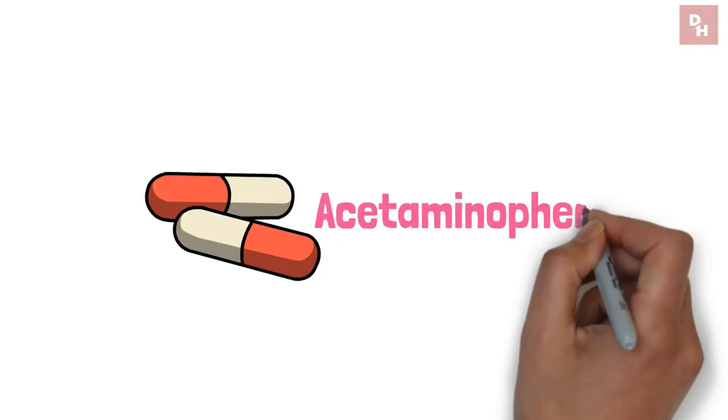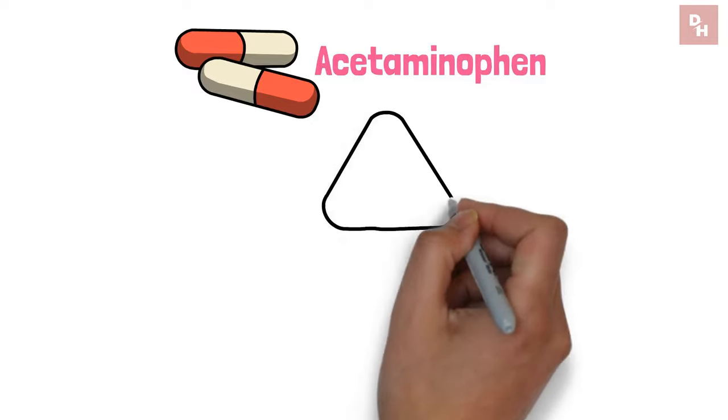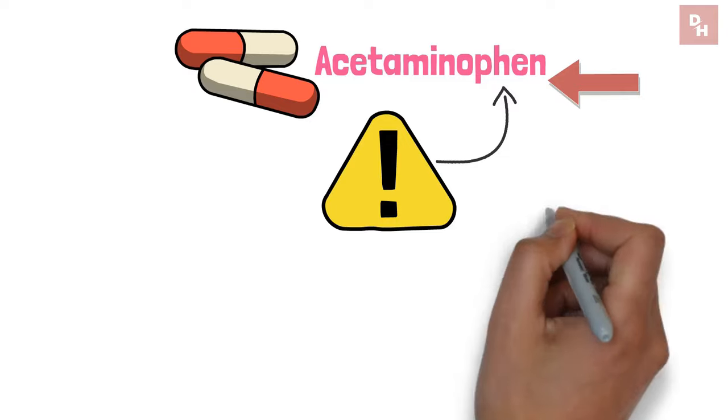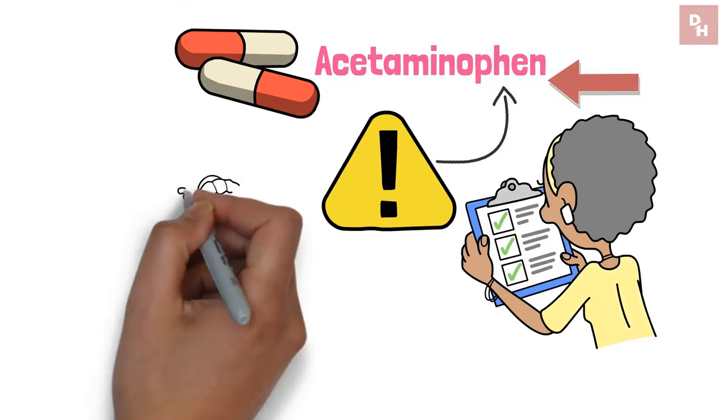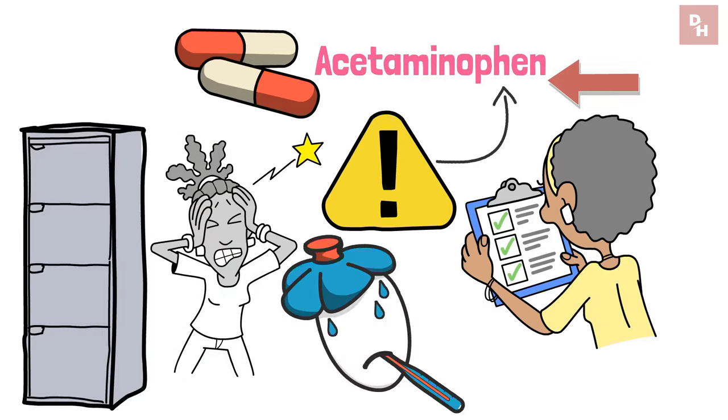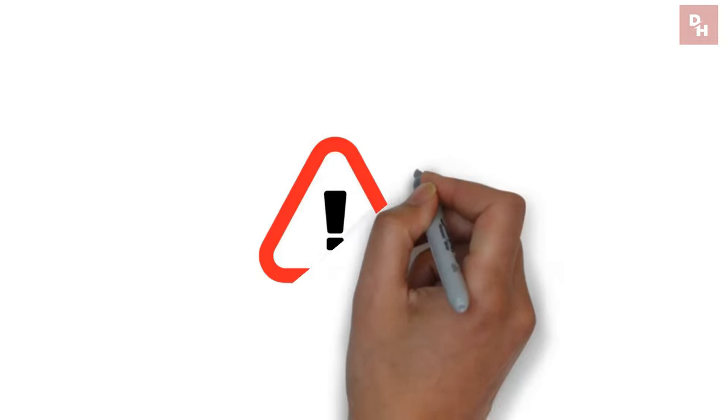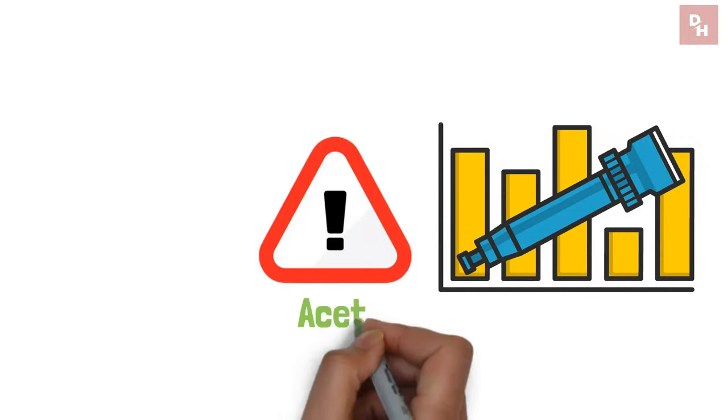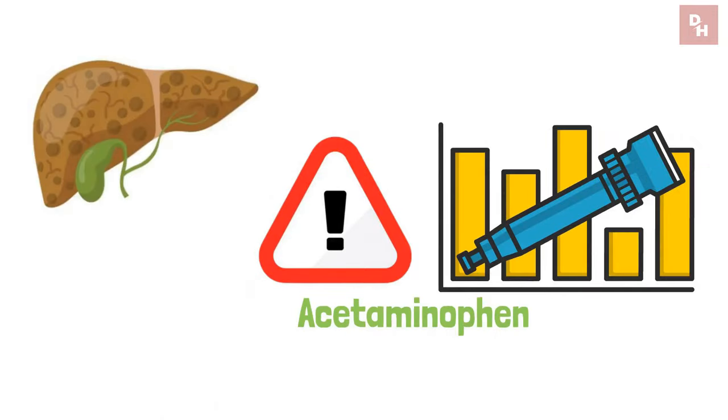Pill 1, acetaminophen. The hidden risk behind your go-to painkiller. Acetaminophen, found in a myriad of over-the-counter remedies, from headache cures to cold treatments, is a staple in medicine cabinets worldwide. However, its ubiquity belies a significant risk. When taken in excess, acetaminophen can lead to severe liver damage.